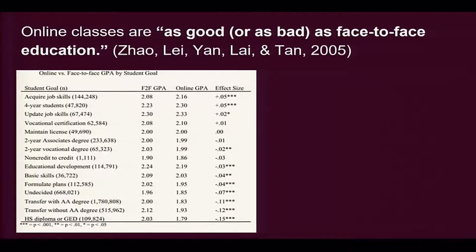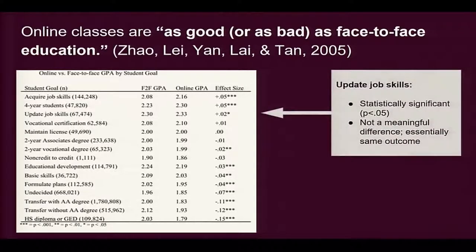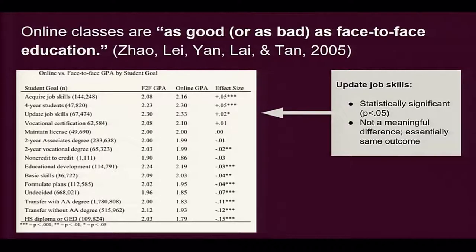It gets interesting when you disaggregate it. This is disaggregated by purpose — let's take the example of 'update job skills.' It is statistically significant, but not a meaningful difference. It's essentially the same outcome either way. Now let's disaggregate it by gender and ethnicity.